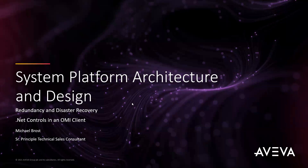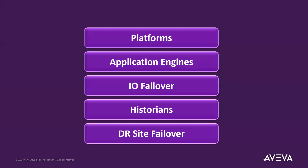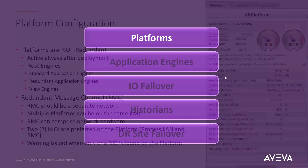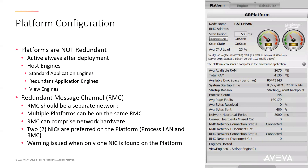We're going to start off with redundancy, and before we get into this, we'll go over a little bit of the core components of System Platform and what they do and how they contribute to the redundancy solution we typically want to engineer. The first thing is we have an object in the galaxy we call a platform. Unlike other SCADA systems where operating systems become redundant, in System Platform the platform object represents the operating system and they are not redundant — by design they're not redundant. When you deploy a platform object, it is always running, always on, always performing its role and duties.